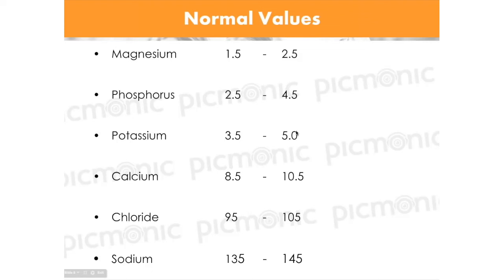In what clinical scenario would we give magnesium? Think about maternity with preterm labor — I have uterine contractions and I need to calm that muscle down, so I give magnesium. The way I know I've given too much is by measuring deep tendon reflexes: if they disappear, I stop giving magnesium. We also give it for torsades de pointes, which is polymorphic V-tach, to calm that heart muscle down. And in preeclampsia as well.